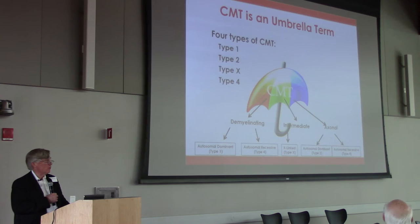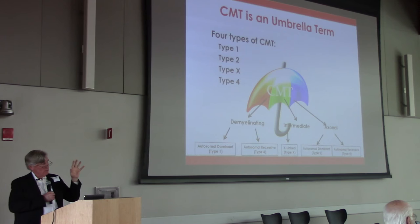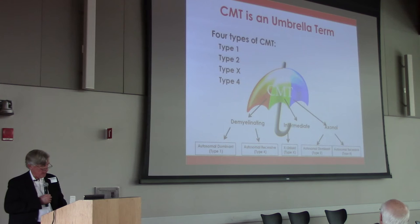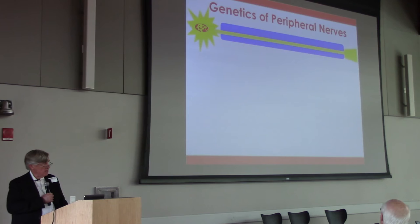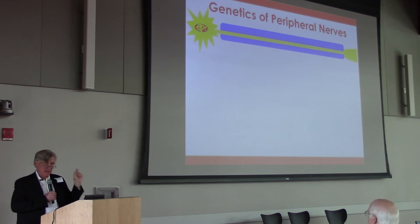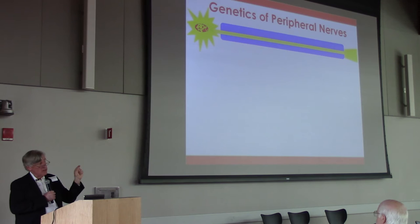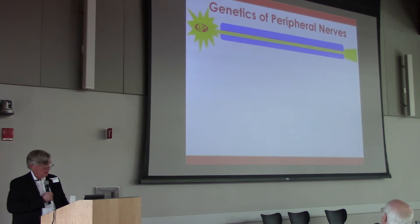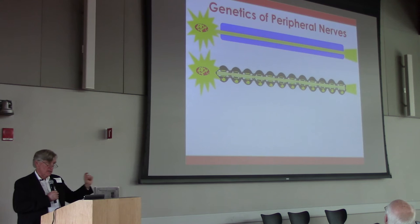Now let's move on to treatment. We've built this up — we have patients that are well cared for, electrical testing that helps pinpoint the kind of neuropathy they have, and we've worked out genetic changes. The cell body of all nerves is in the spinal cord or adjacent to it. All of the DNA is in the cell body, in the nucleus. So if you need to fix the DNA in a nerve cell's nucleus, you've got to get something into the spinal canal.